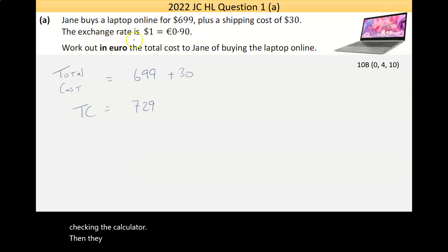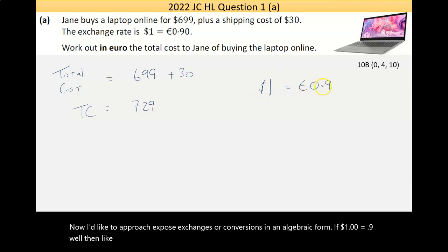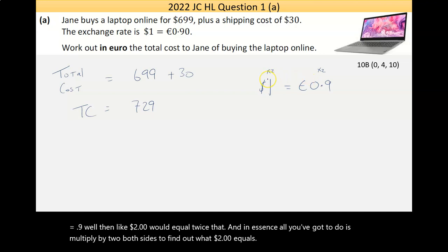Now then they tell me that the exchange rate is $1 equals 0.90, 90 cents basically, or 0.9 of a euro. I like to approach exchanges or conversions in an algebraic form. If $1 equals 0.9, well then like $2 will equal twice that. In essence, all you've got to do is multiply by 2 both sides to find out what $2 equals.